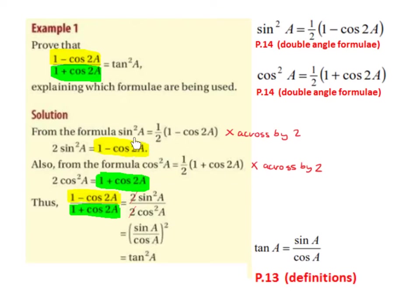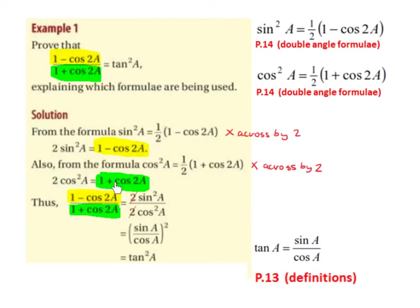From the formula, sine squared a equals 1 half times 1 minus cos of 2a. We're going to start off by multiplying across by 2, so we end up with 2 sine squared a, and the 1 half times 2 cancels out, leaving 1 minus cos of 2a. Next, taking the formula cos squared a equals 1 half times 1 plus cos of 2a and again multiplying across by 2, we get 2 cos squared a equals 1 plus cos of 2a, as the half and the 2 cancel each other out.